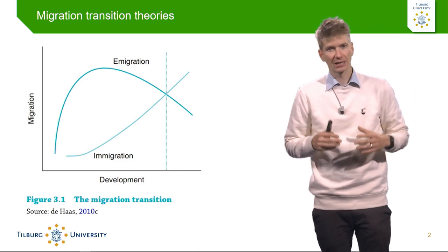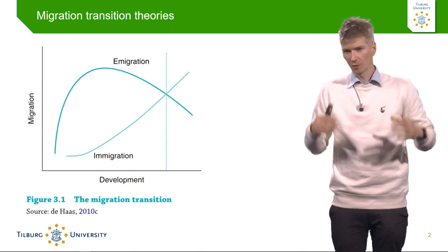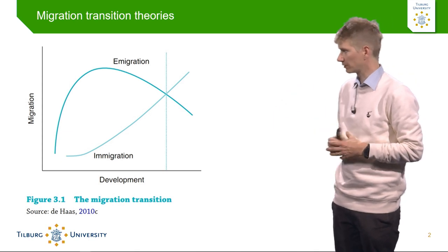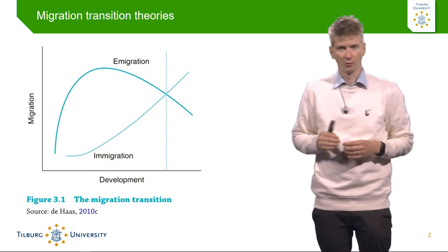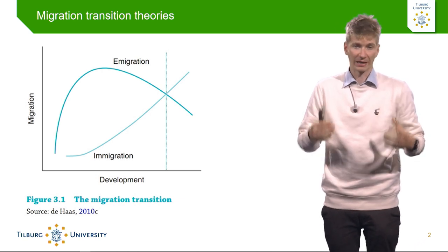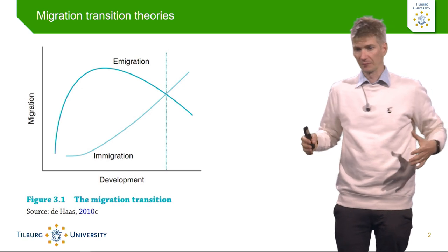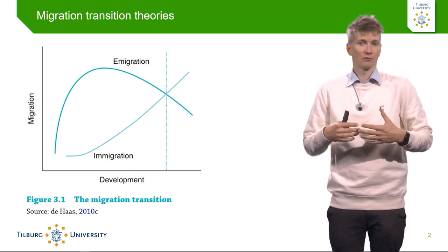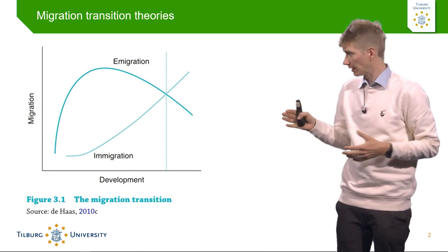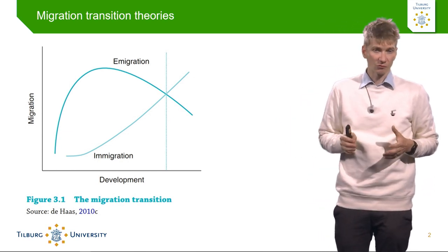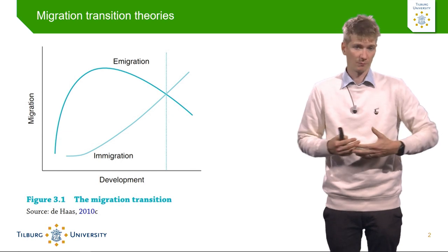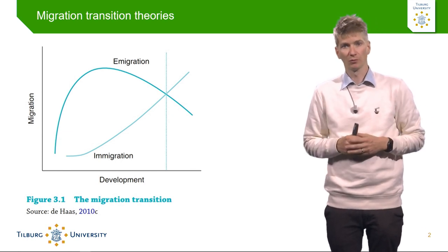What does that mean? Basically, when people are poor — on the graph you see here next to me, at the left side — migration is low and development is low. This is because people living in poor societies are very unlikely to have sufficient financial resources to migrate. This is sometimes called the poverty constraint, which forces them to stay in the country of origin. The more developed the country becomes, as you can also see in the graph, the more people will start to emigrate, because the financial possibilities of people increase with development.